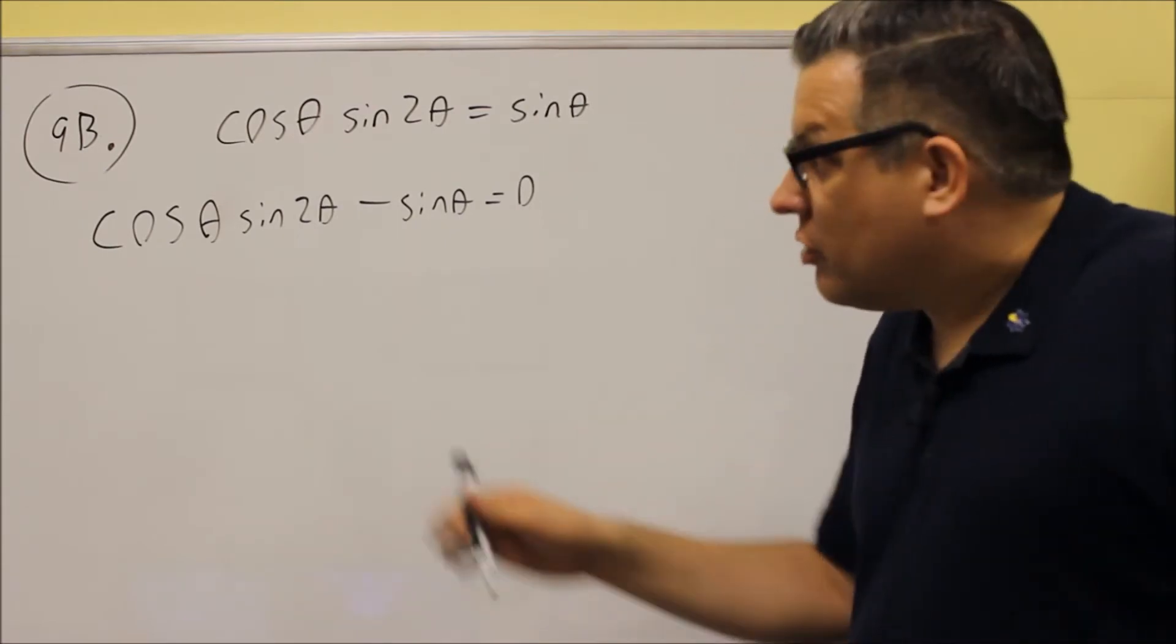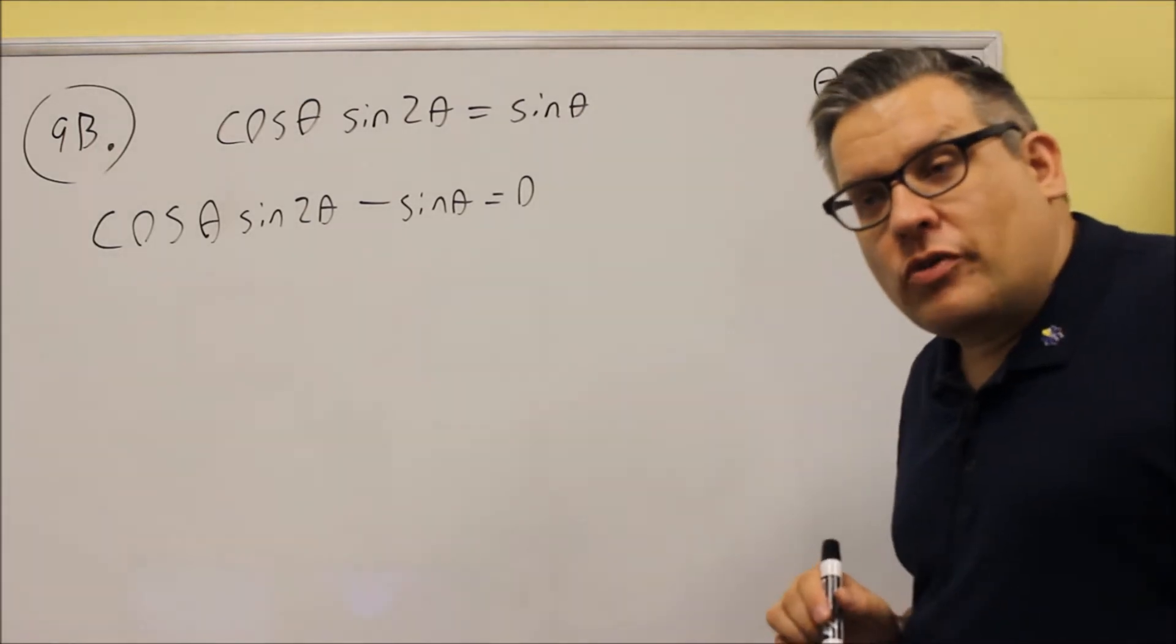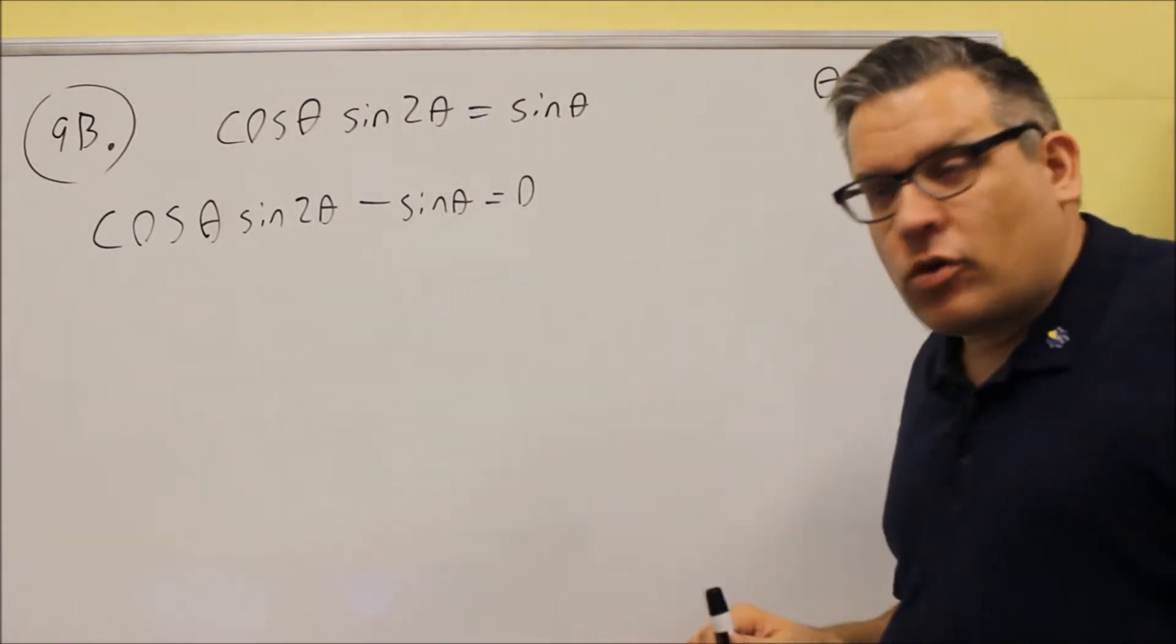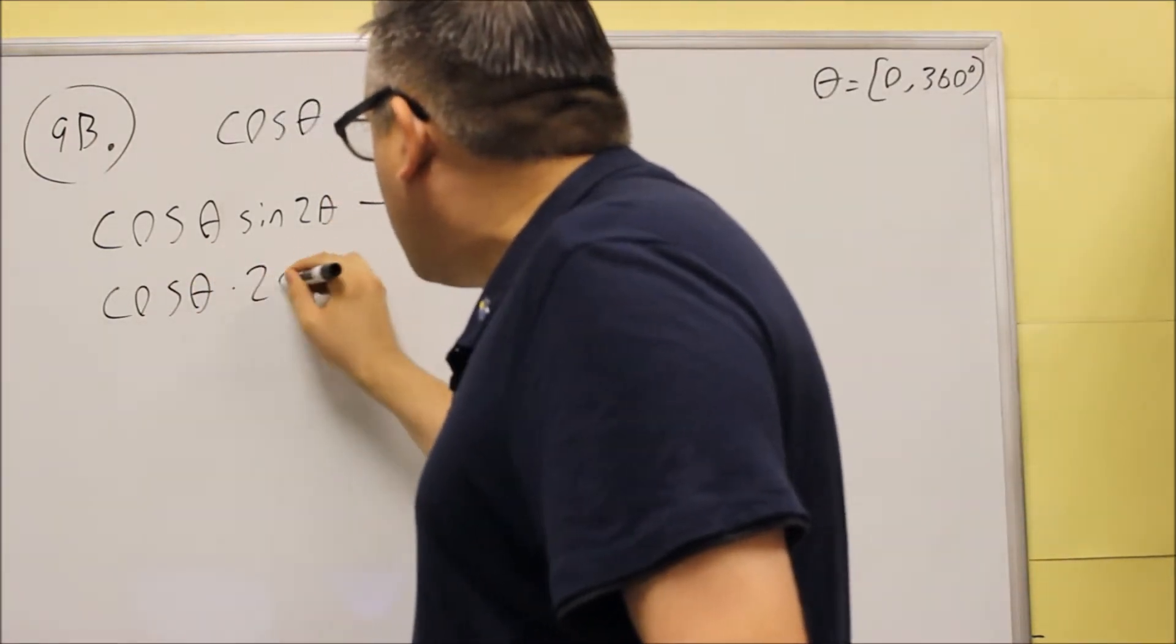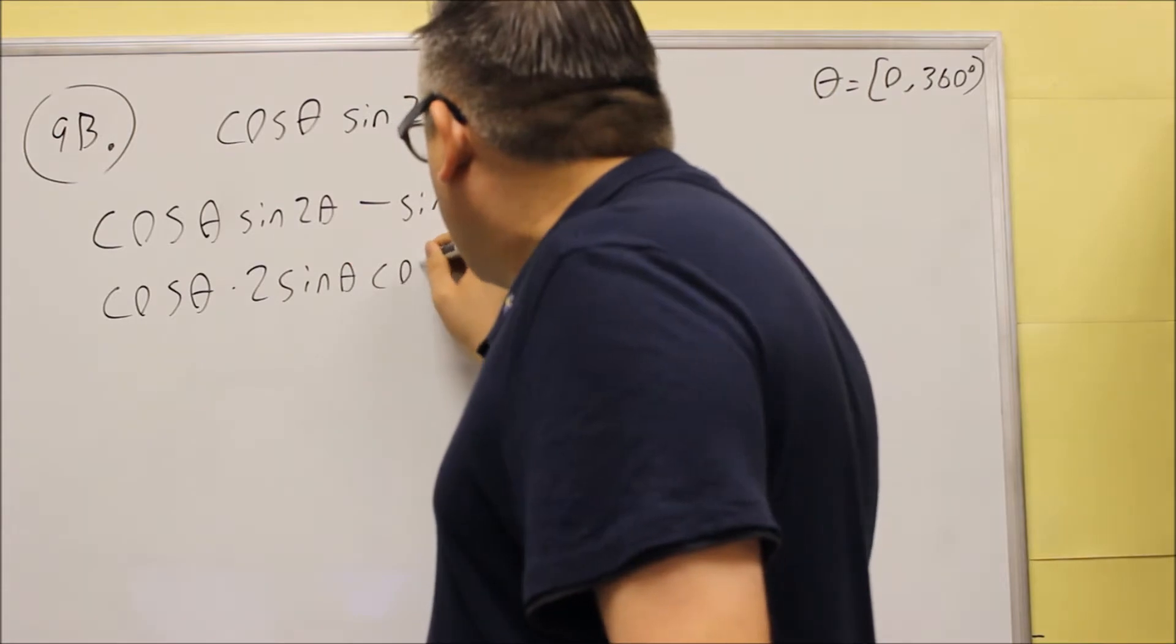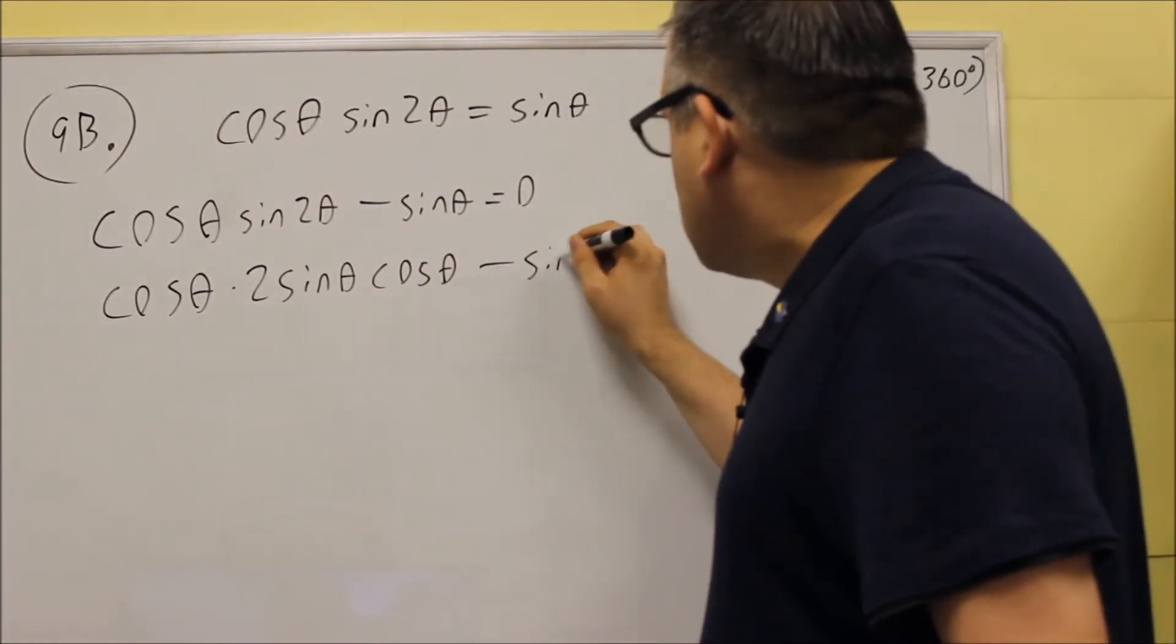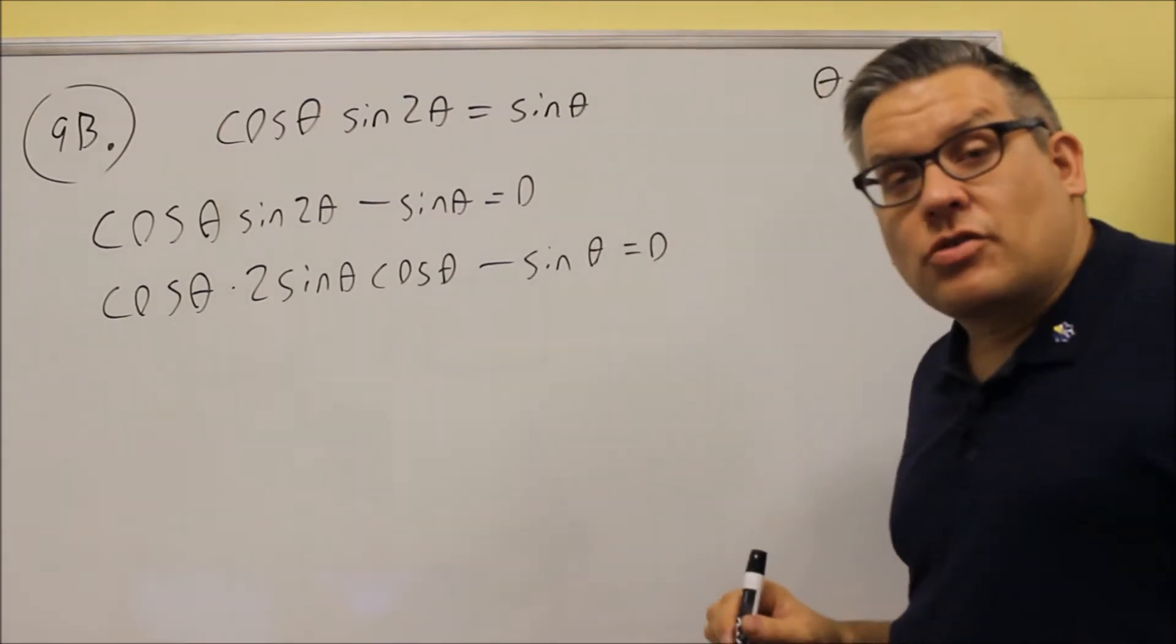Instead what you want to do is put the identity in for sine 2 theta. That was a double angle formula. We did a problem previously on this test that had to do with that one. So we're going to use that same identity here. Now the identity that you want to use is 2 sine theta cosine theta. That's the identity for sine 2 theta.